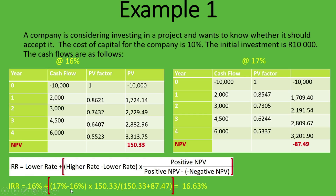Plugging into the formula: IRR = 16% + (17% − 16%) × 150.33 ÷ (150.33 + 87.49). When calculating, treat the rates as whole numbers — 17 minus 16 gives 1, so you multiply by 1. Divide the positive NPV by the sum of both NPVs treated as positives, add 16, and you get an IRR of 16.63%.